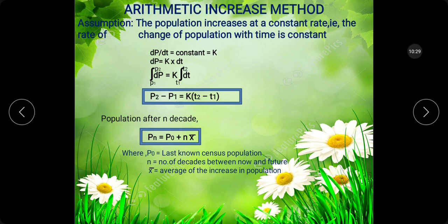Suppose 2020 is the present time and we want to find the population in 2050. Then P0 is the last known census population, that is the 2020 population. n is the number of decades between now and the future: 2050 − 2020 = 30 years, therefore n = 3 decades. x̄ is the average of the increase in population. Using the Arithmetic Increase Method, first find the increase in population for each period, then take the average x̄. Then Pn = P0 + n·x̄.